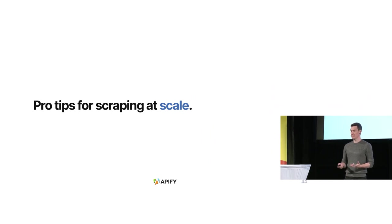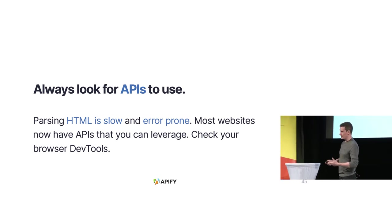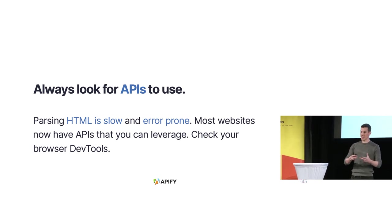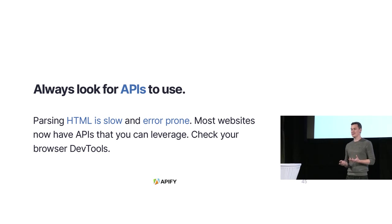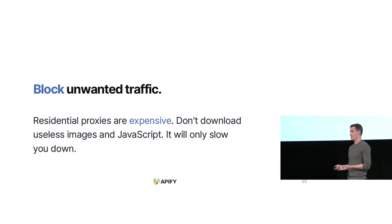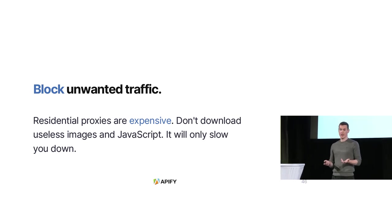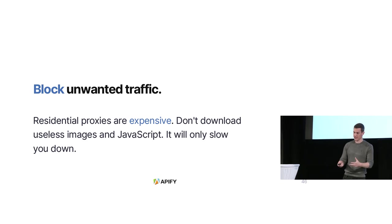I'd like to finish with some tips you can use anytime you scrape more than 100 pages. First: always look for APIs. If you open the network tab in DevTools, you'll see communication between the web page and their servers — nowadays you don't have to extract data from HTML. You can use API calls to get data already structured. It's much faster, cheaper, and doesn't put as much pressure on the website. Second: block unwanted traffic. It reduces costs and is especially important with residential proxies, which are billed by gigabyte — you really don't want to download ads, images, and stylesheets. Just focus on the data.